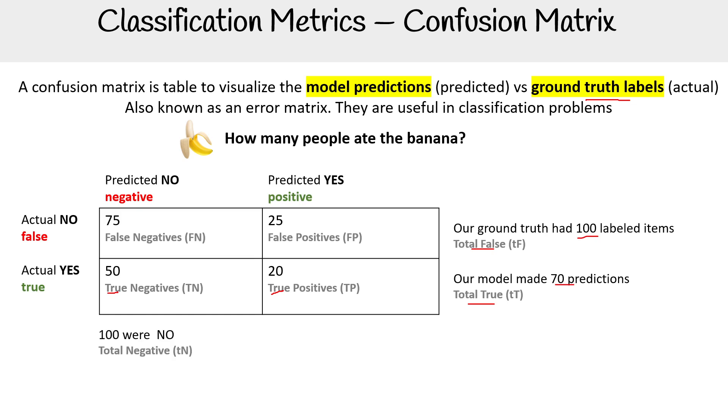Then down along the bottom here, we have our total negative. So that was just the amount of predictions and actual truth that were labeled as negative. And then you have your total positives. And so then we have our total, which is T, which gives us 170 items.